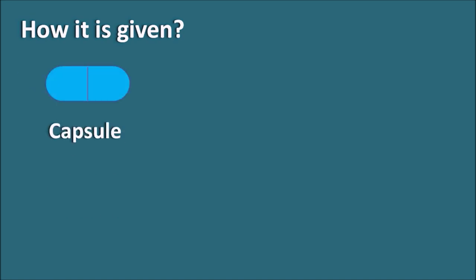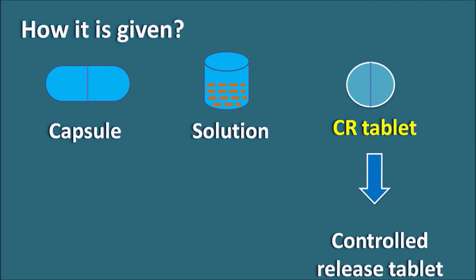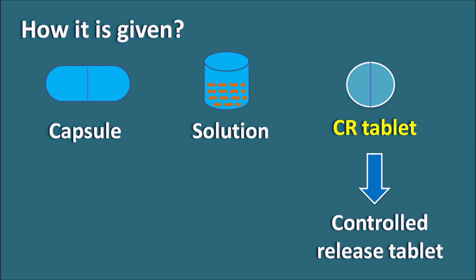How is pregabalin given? Pregabalin is given in different dosage forms. It can be given as a capsule form and also as a solution form. This drug is also available as a tablet, but specifically as a CR tablet — the CR indicates controlled release. These controlled release tablets release the drug in a controlled or extended way, so the drug is slowly released from the dosage form and is available for a longer period.